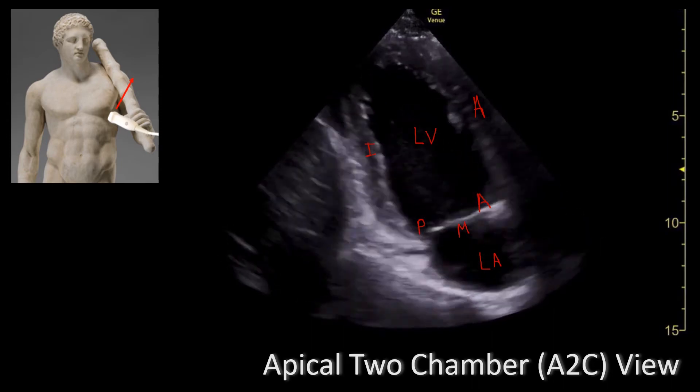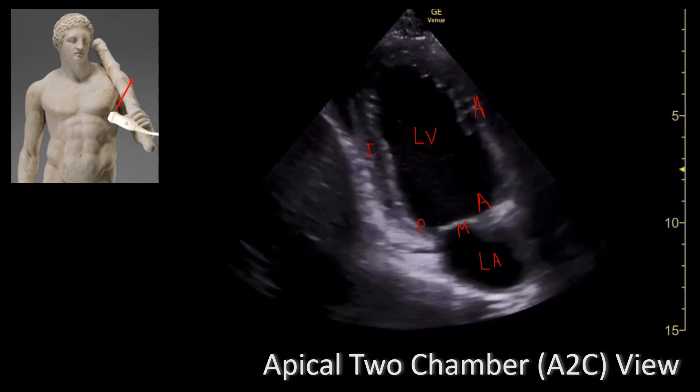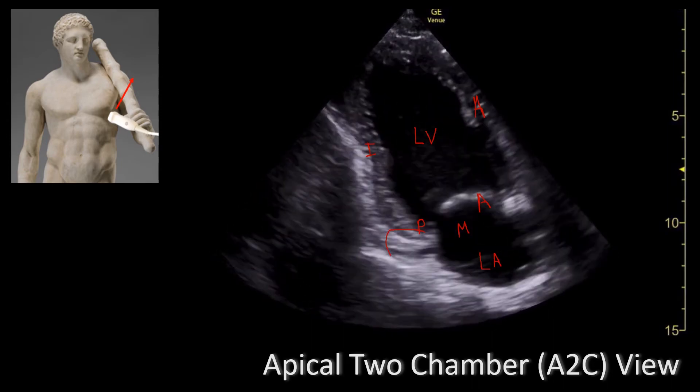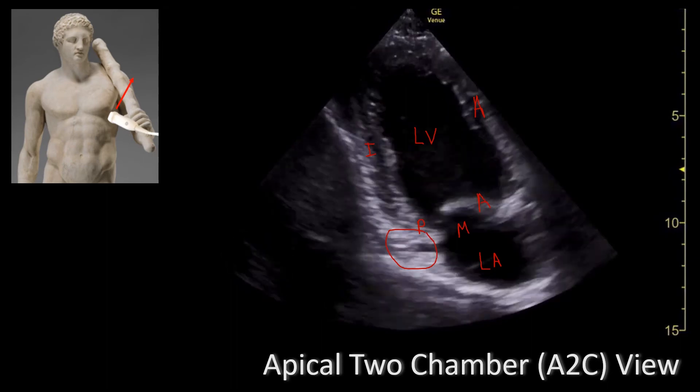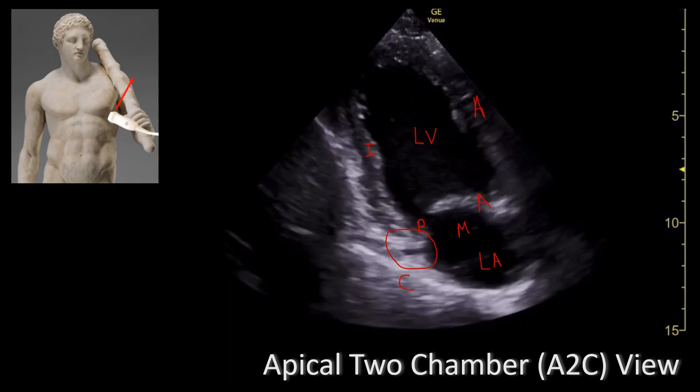If you pay close attention, between the ventricle and the atrium you have this structure right here, and this will be the coronary sinus.